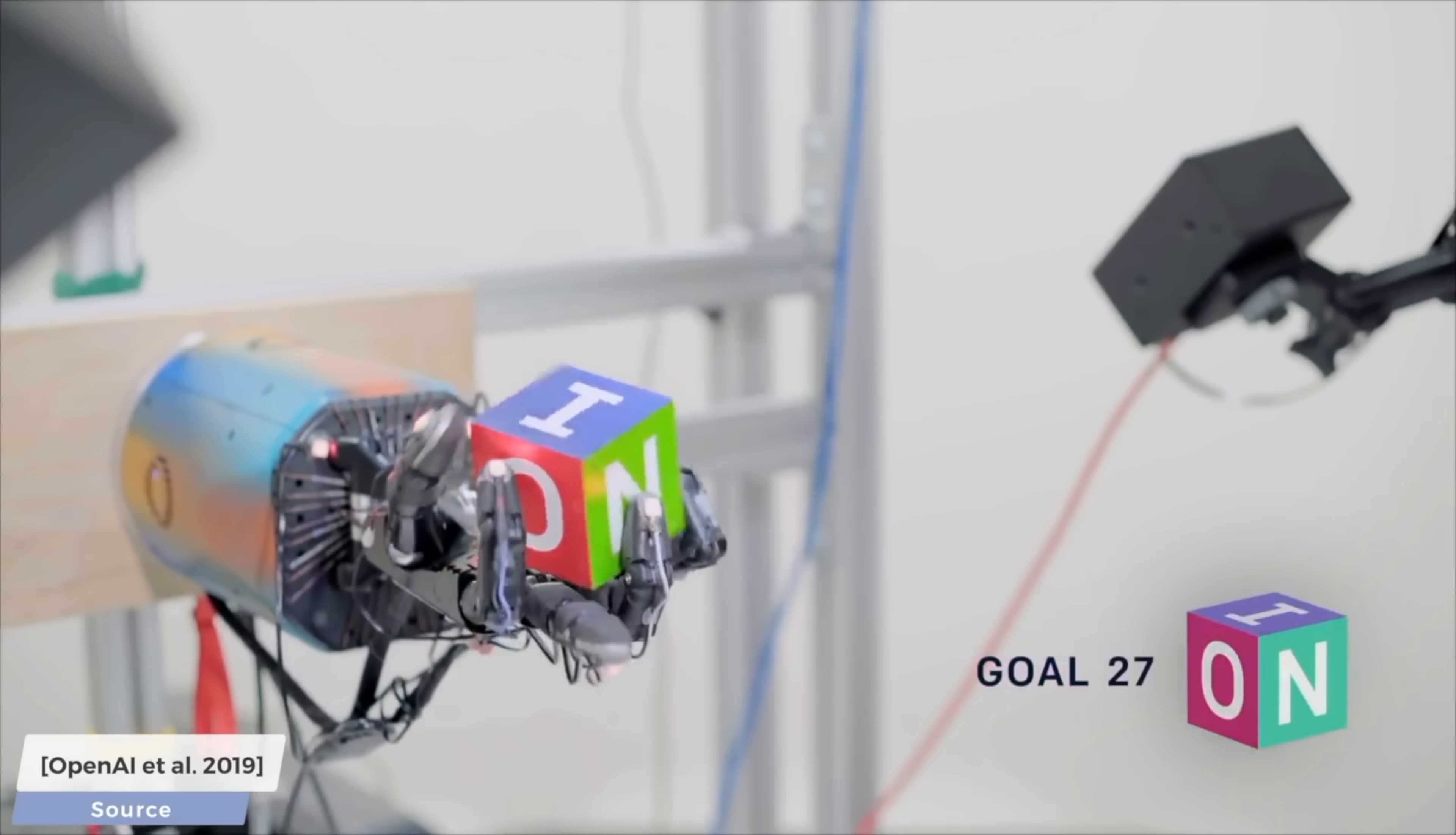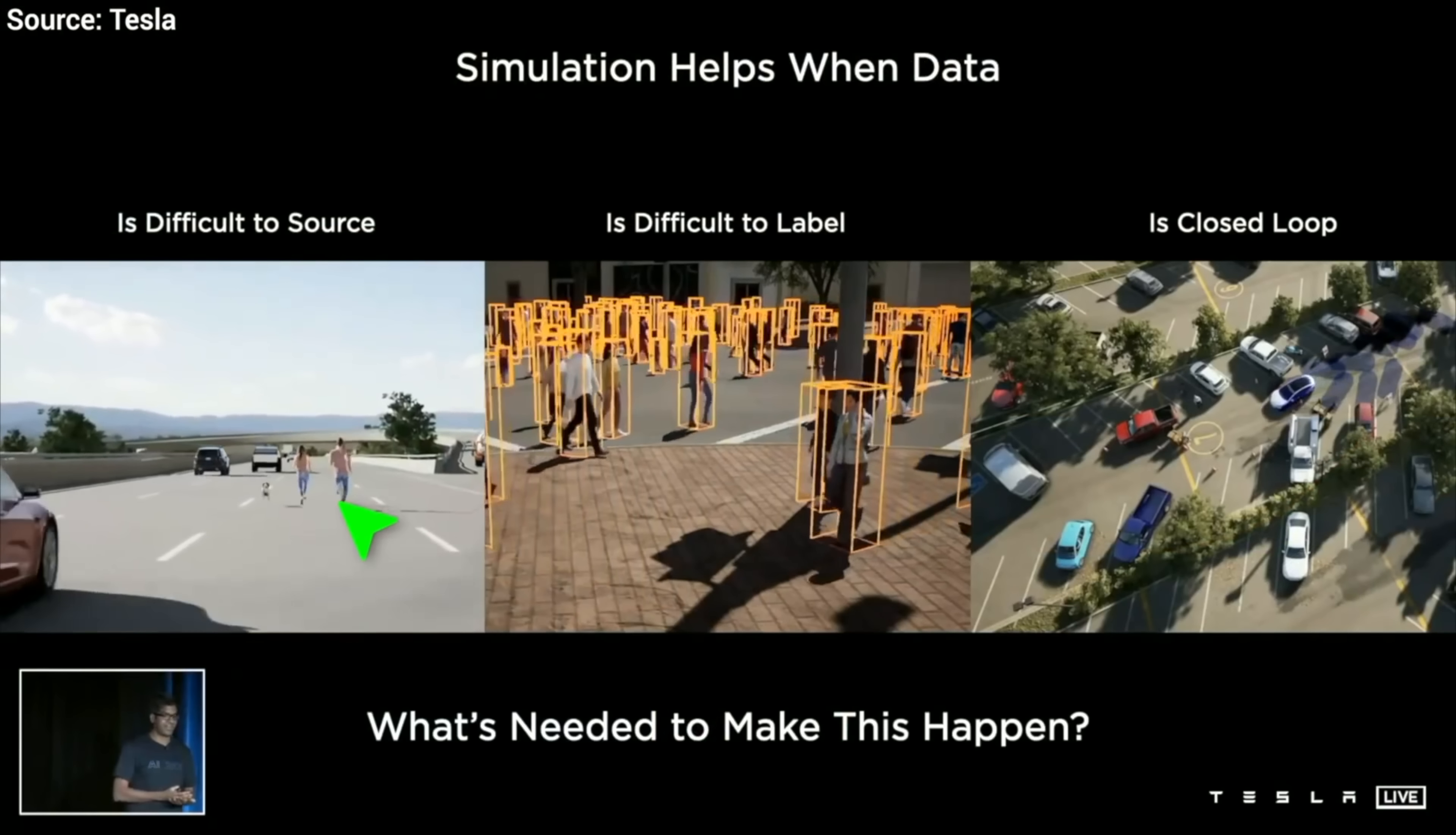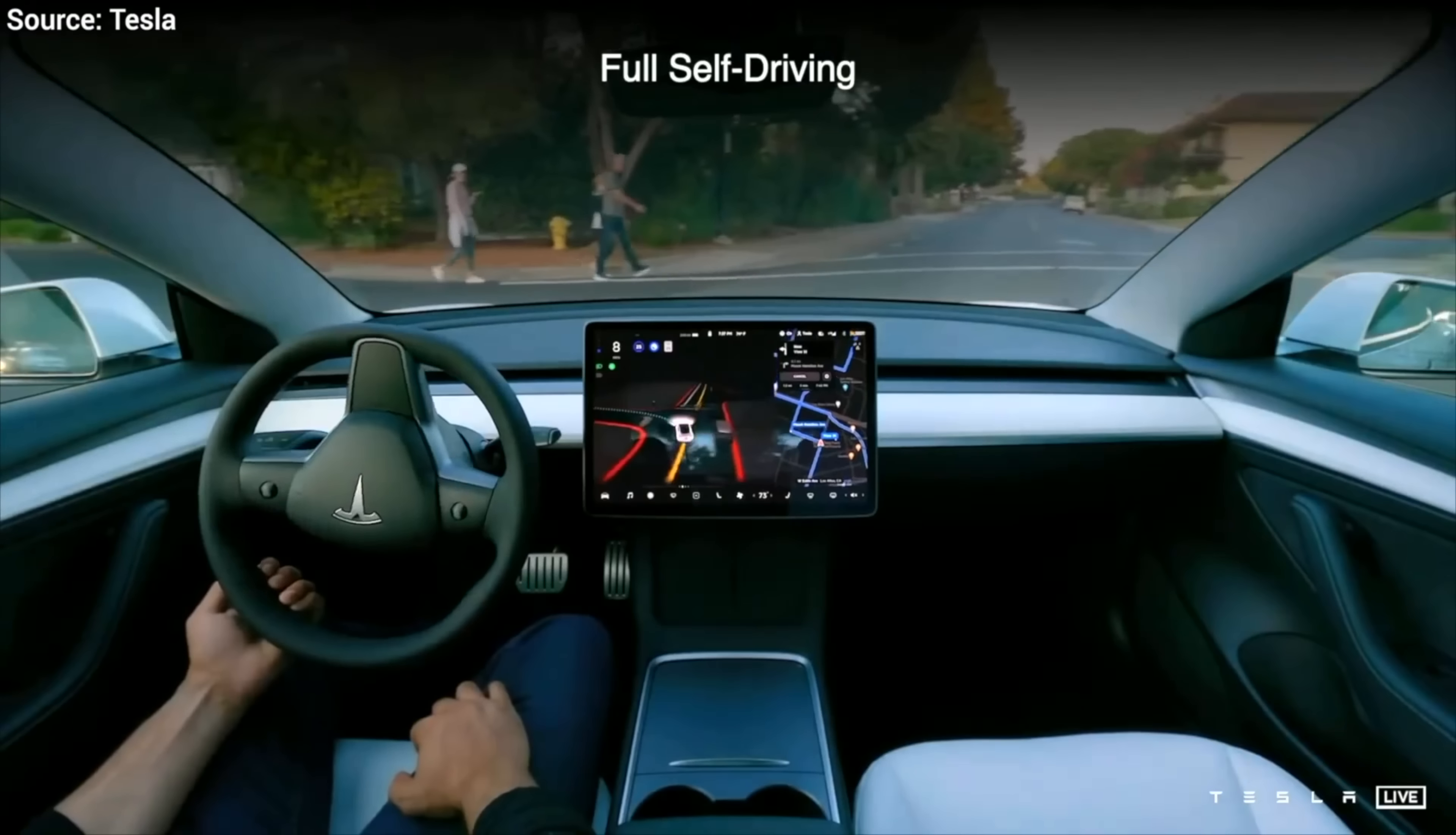But, sim to real has relevance to self-driving cars too. Look, Tesla is already working on creating virtual worlds and training their cars there. One of the advantages of that is that we can create really unlikely and potentially unsafe scenarios, but, in these virtual worlds, the self-driving car can train itself safely.